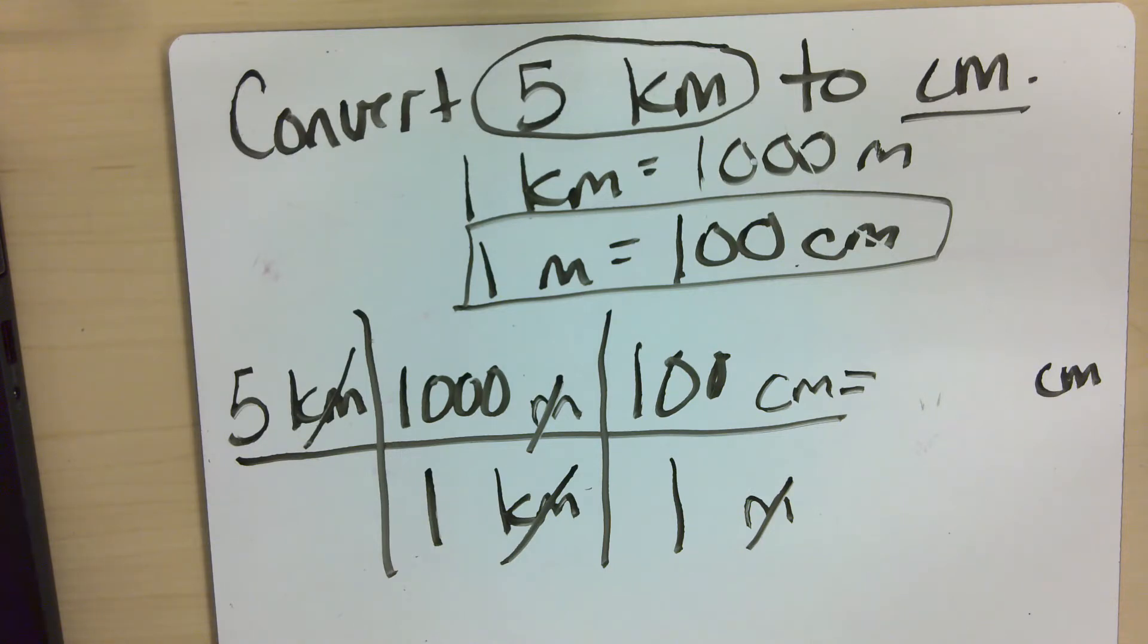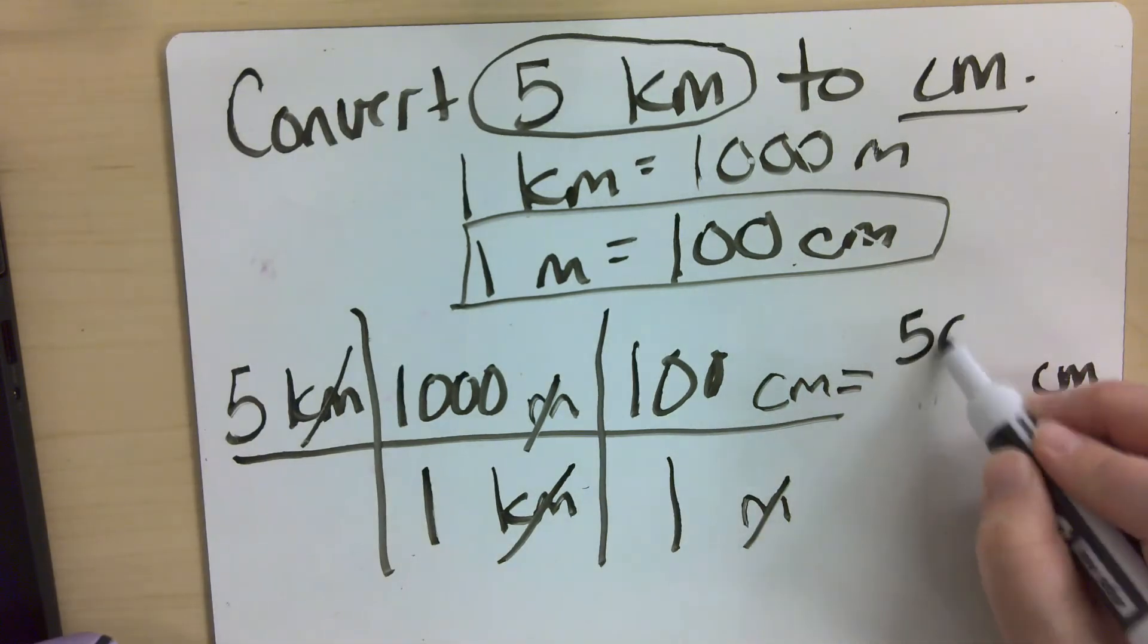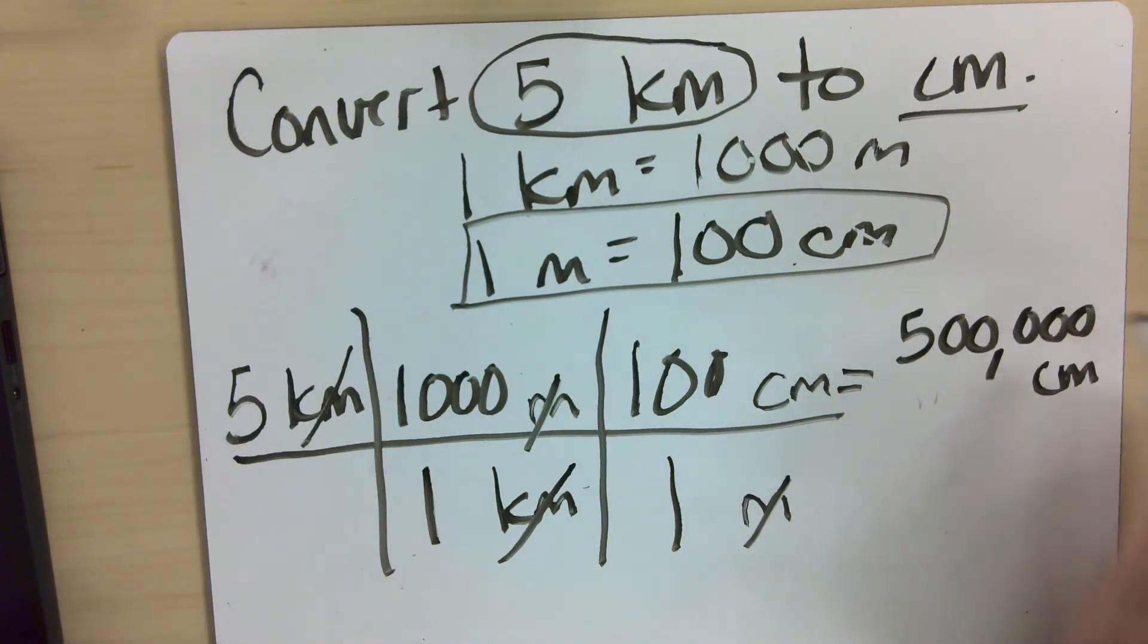So when you do that, you would get 500,000 centimeters. And it's also fine to do this in scientific notation if you prefer that.